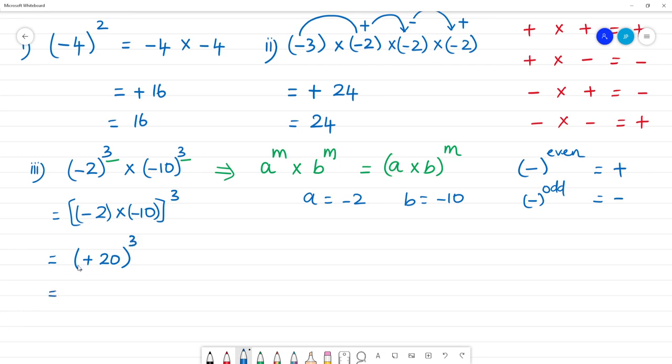Plus into plus into plus gives plus. 20 multiplied by 20 multiplied by 20. 2 times 2 is 4, 4 times 2 is 8, 8 with three zeros is 8000.